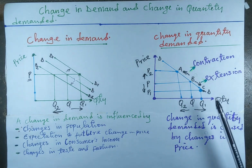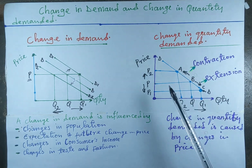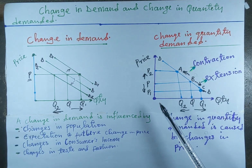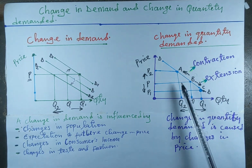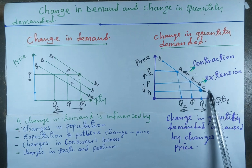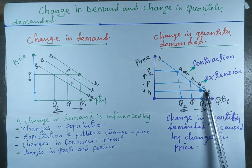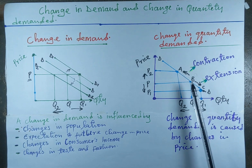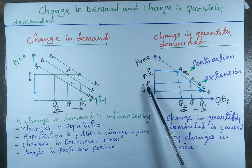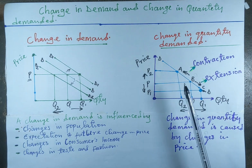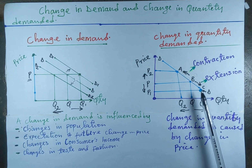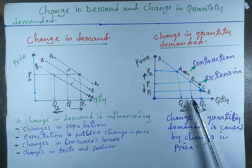Now let's move to the change in quantity demanded. The change in quantity demanded is the movement along the demand curve that is caused by price only, and other factors are held constant.